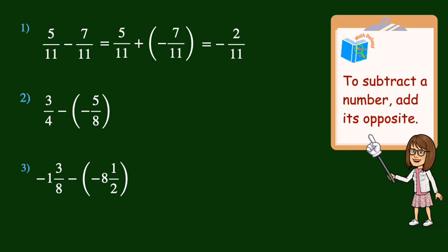Now let's subtract positive 3 fourths minus negative 5 eighths. Remember, to subtract this negative, we need to add its opposite. So we keep 3 fourths and then add the opposite, positive 5 eighths. Now, since the signs are the same, we add and keep the sign.